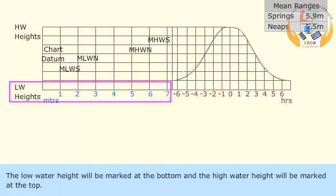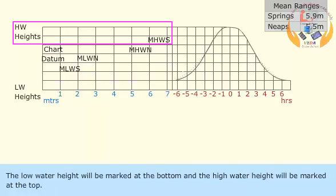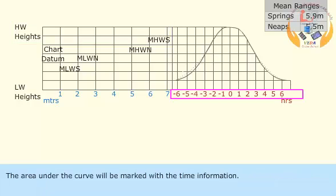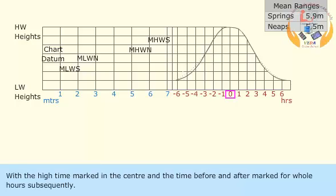The low water height will be marked at the bottom and the high water height will be marked at the top. The area under the curve will be marked with the time information, with the high time marked in the center and the time before and after marked for whole hours subsequently.